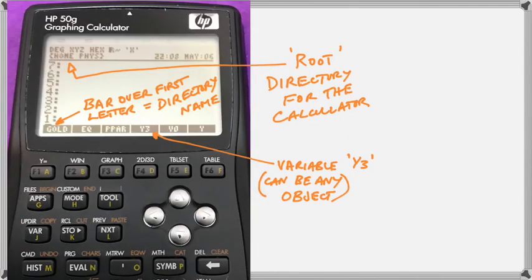Okay, so what we've done here is we've moved the calculator up directory. We've used the up directory key to move up so that you can see that home is the root directory. When you get the calculator and you haven't created any directories, you have the home directory, which is the same as the C directory on your hard drive.